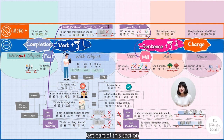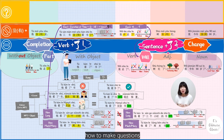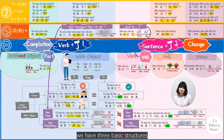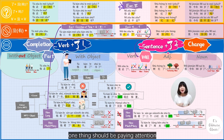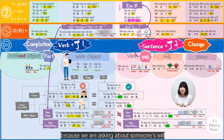Last part of this section: how to make questions. We have three basic structures. One thing to pay attention to: we use 走不走 instead of 走没走 when asking about someone's will.